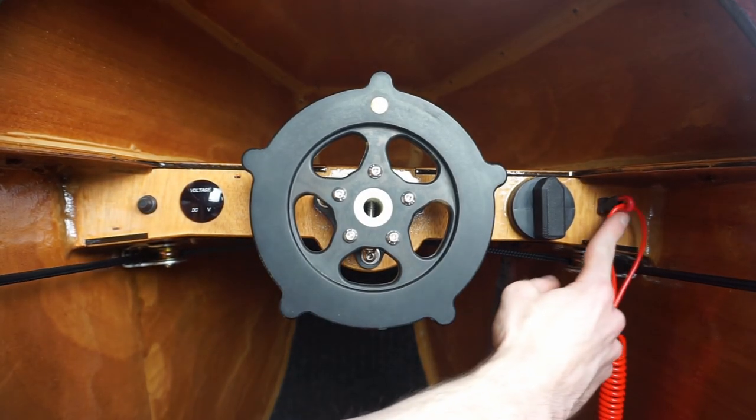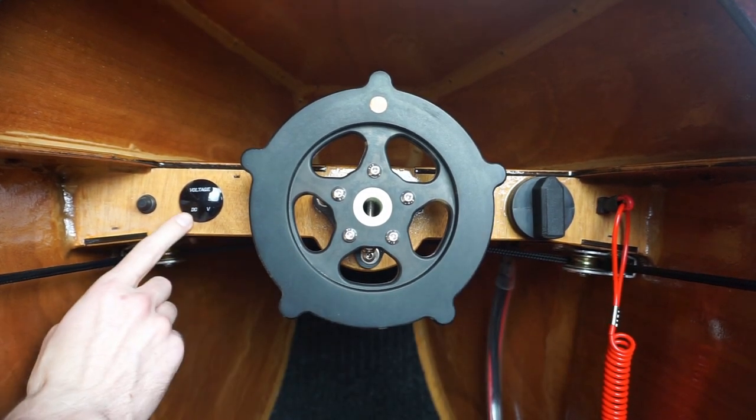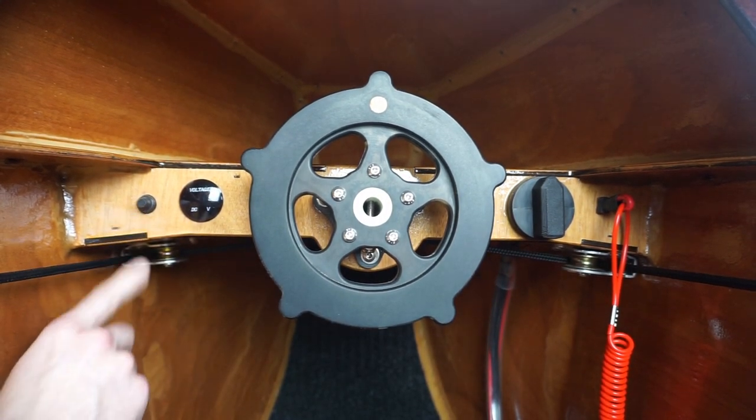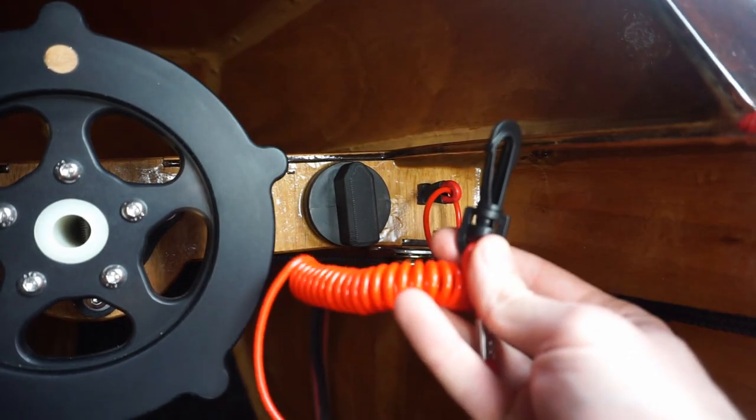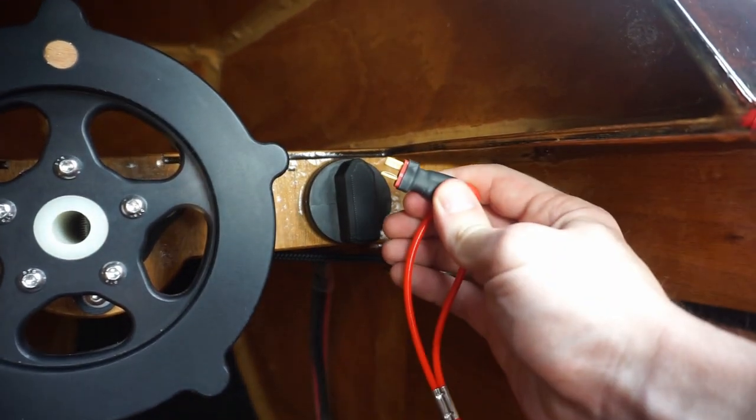On the dash, there's a dead man switch, a throttle, a steering wheel, a voltmeter, and a switch. The dead man's cable attaches to your life vest and it kills all power in the event that you fall out because it breaks the connection.